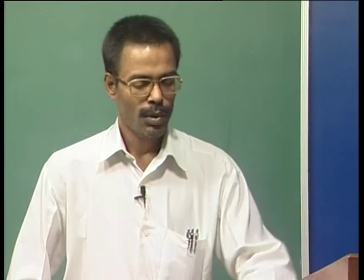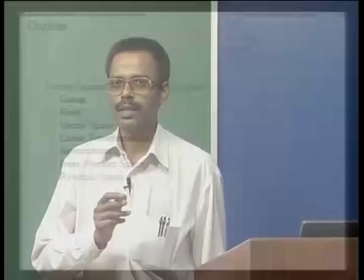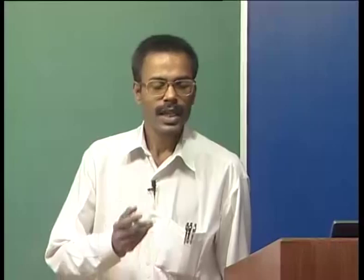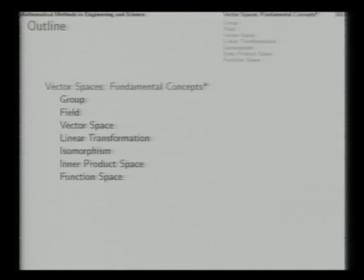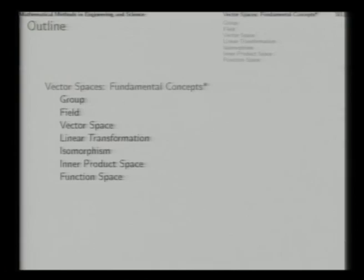Welcome. This is the last lecture in the module of linear algebra. This lecture is a little abstract. In this lecture we try to consolidate all the conceptual ideas on which we have worked till now, from fundamental concepts of vector spaces. We quickly recapitulate the definitions of group and field and then continue the discussion on vector space, linear transformation, etcetera, in which we find that the mathematical and computational tools with which we have been working are all the product of the basic abstract ideas in this area.